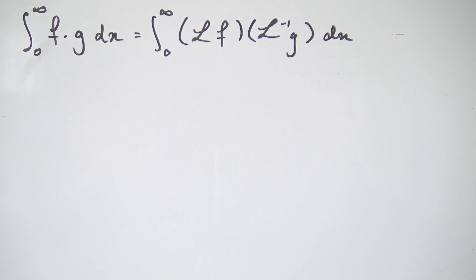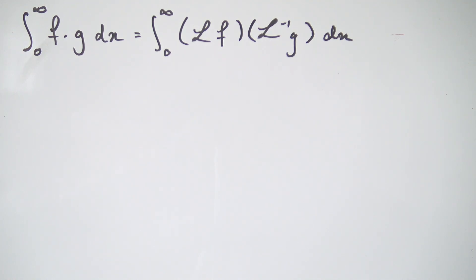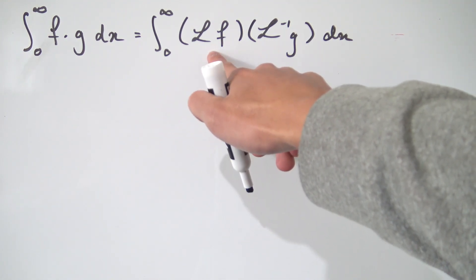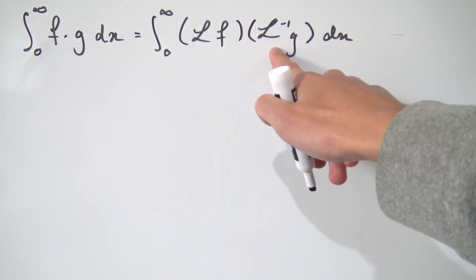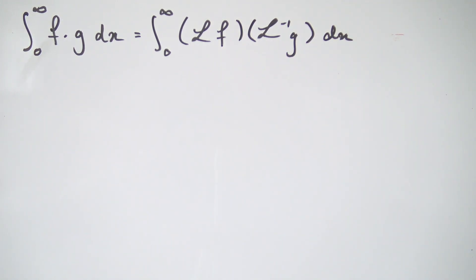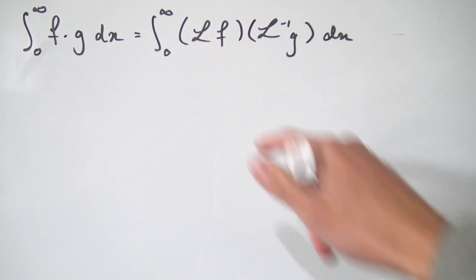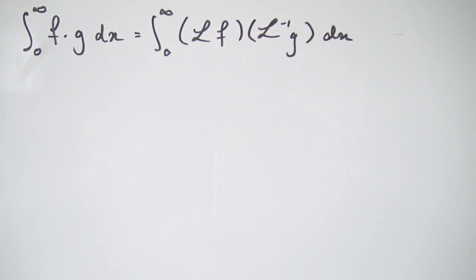Hello everybody, and today we're going to be taking a look at this neat little Laplace transform identity for improper integrals, which says that if you have the integral from 0 to infinity of the product of two functions f and g, it's really the same thing as the improper integral from 0 to infinity of the Laplace transform of f times the inverse Laplace transform of g. I don't know if this identity has a name, but it's quite a nice one because it's kind of like these two Laplace transforms balancing each other out. So let's just jump straight into it.